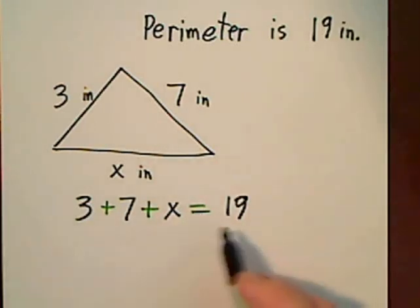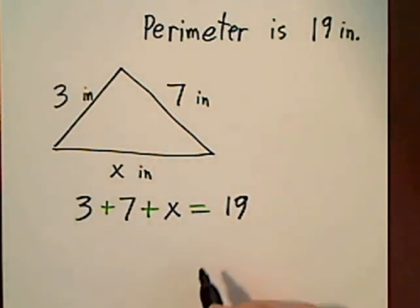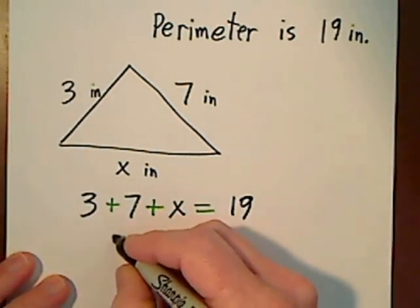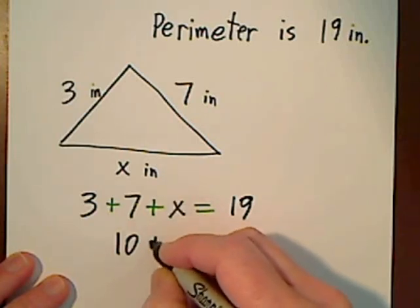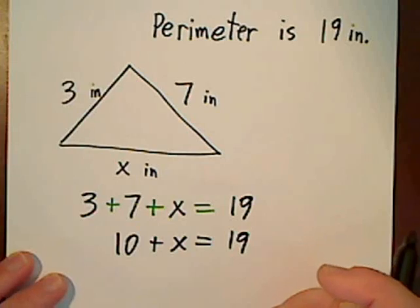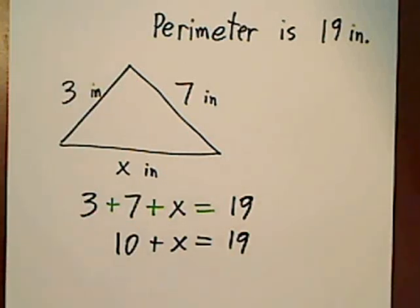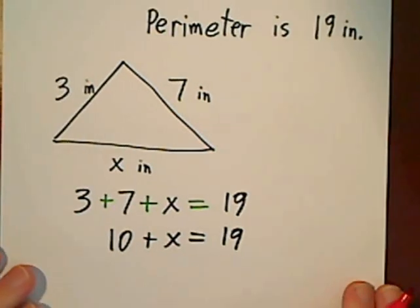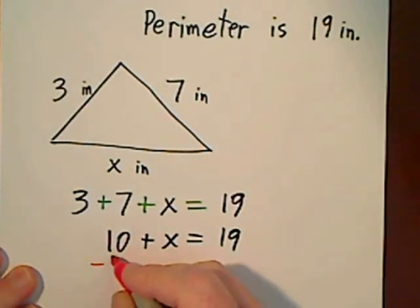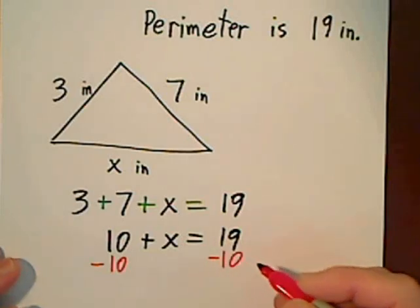And now we solve for x. So you can combine like terms — 3 and 7 gives us 10. Bring down your plus x, and now get rid of that 10. It's held there by addition, so you achieve the opposite operation with the opposite sign. So I'll put negative 10 here, negative 10 here.